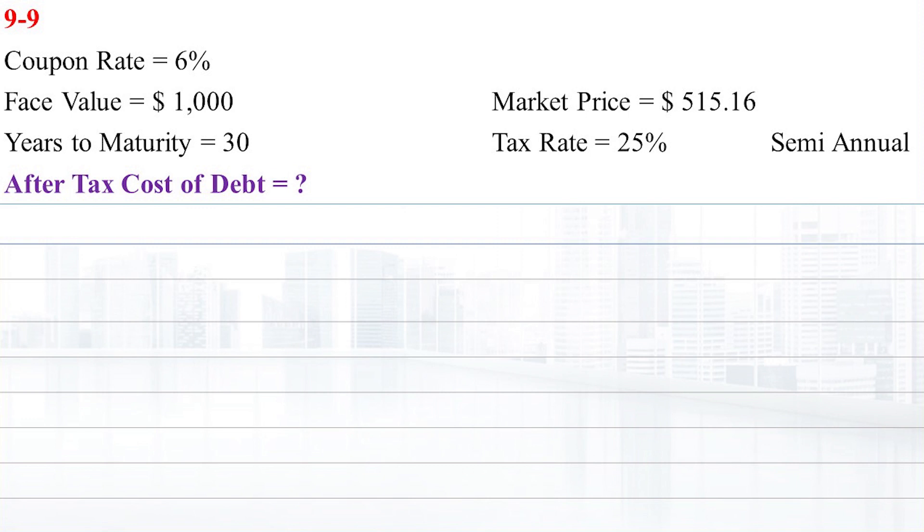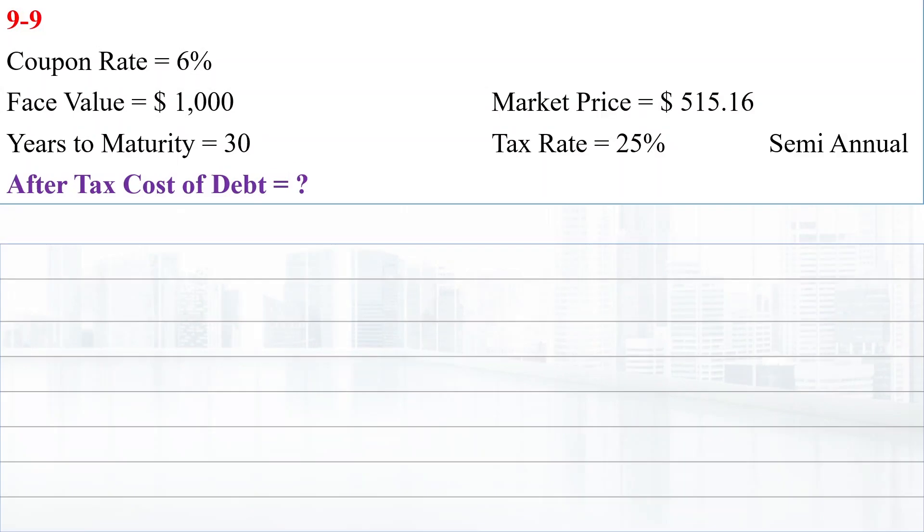The company's federal plus state tax rate is 25%. What is the firm's after-tax component cost of debt for purposes of calculating the WACC?